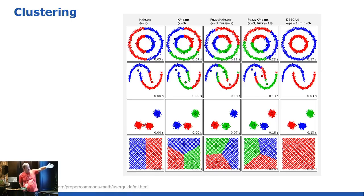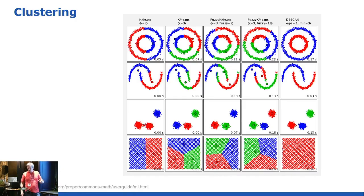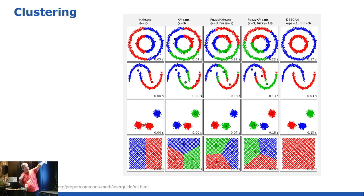You typically pick a number of clusters to guide these algorithms. Some algorithms determine the number of clusters themselves; others do whatever you specify. If I pick two clusters maybe the algorithm says there are two groups there — but a human visualizing this would probably say there are three groups. Some algorithms use distance measures, some use density measures. The DBSCAN algorithm, for instance — you can see in the far right column — does a better job of clustering according to human intuition than some of the other ones.